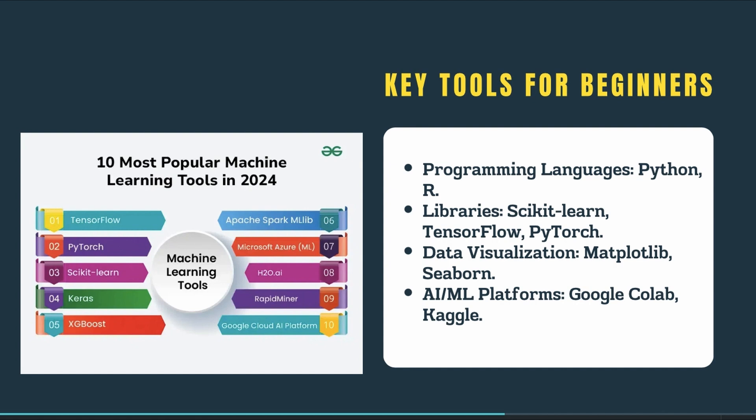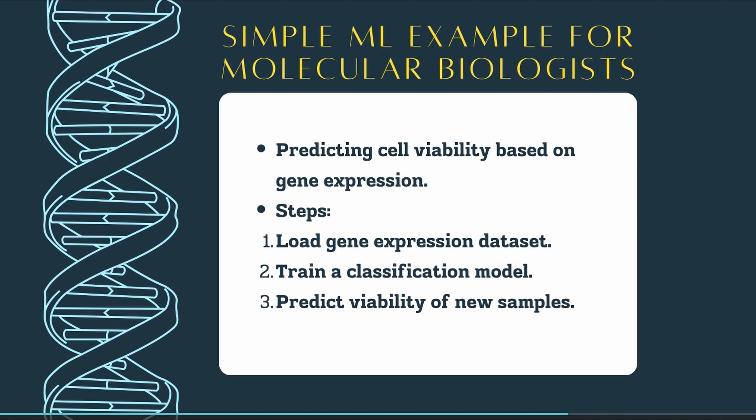For visualization, tools like Matplotlib and Seaborn are great. For more hands-on practice, platforms like Google Colab and Kaggle provide free access to powerful computing resources and datasets. Let's walk through a simple ML example: imagine you want to predict cell viability based on gene expression data. First, you load the gene expression dataset. Then you train a classification model — the model learns to classify cells as viable or non-viable based on gene expression patterns. Finally, once trained, you use it to predict the viability of new samples, enabling quicker data-driven decisions in the lab.